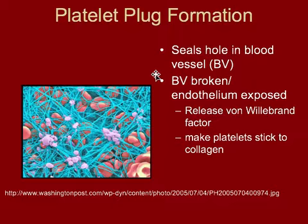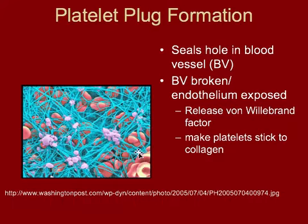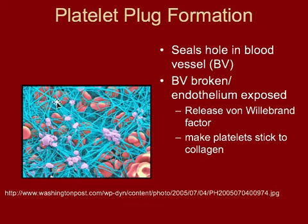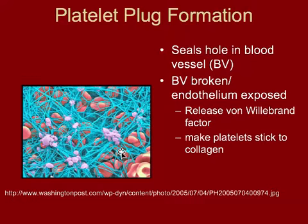The second thing that happens is that those chemicals that were released expose the endothelium, and that is going to cause your platelets — if you look at this picture, it's actually a scanning electron micrograph of a clot, like a scab. You have red blood cells, which look like the little red donuts we're familiar with, the fibrin which is the protein that makes the tough part of a scab, and then the little purple guys on top are the platelets.